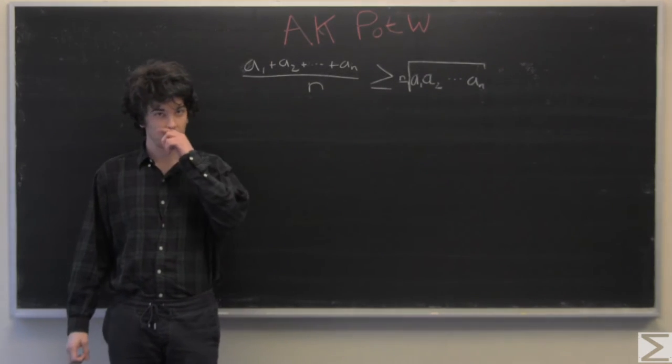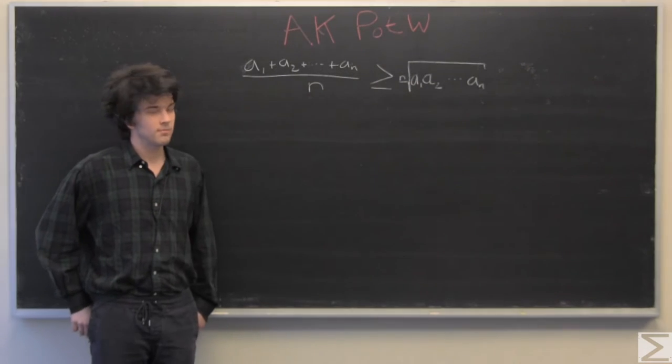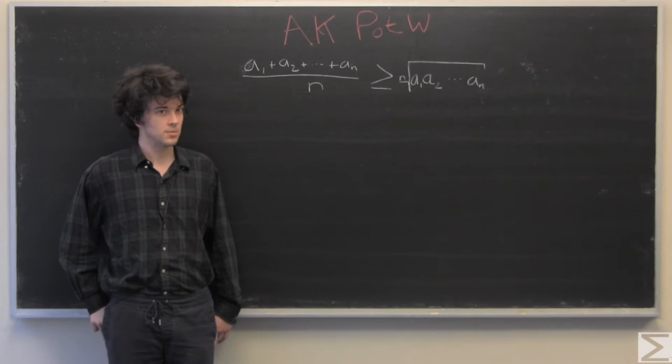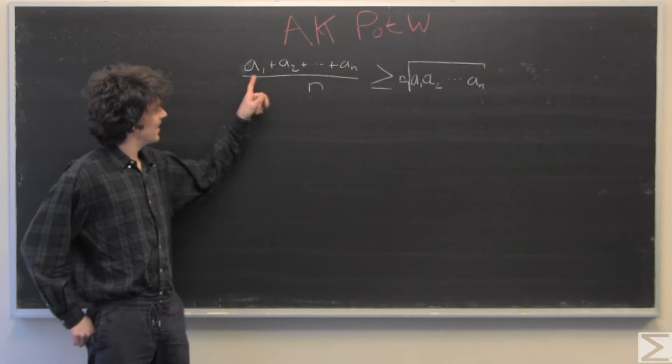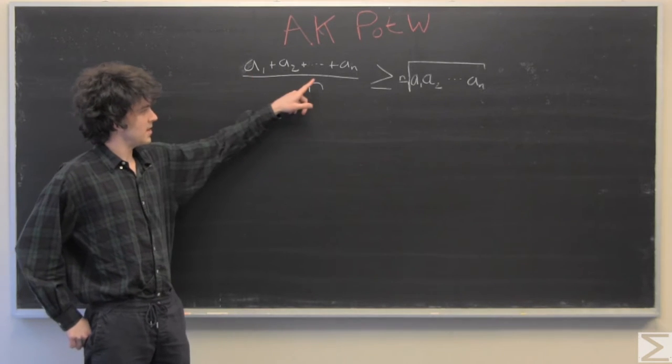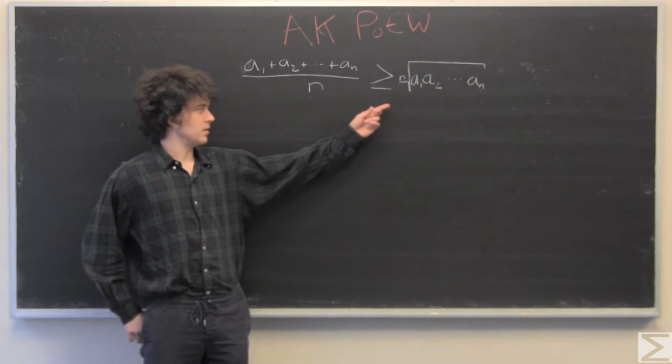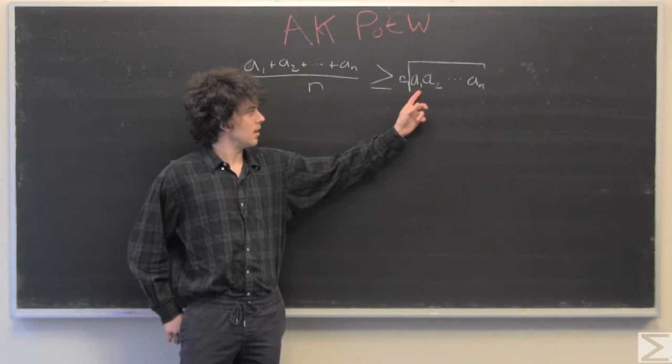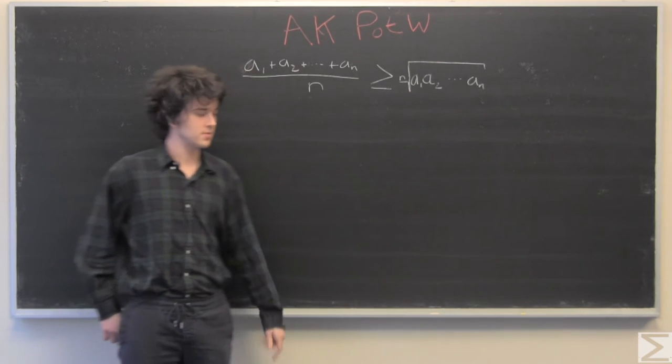Welcome to this week's Advanced Knowledge Problem of the Week. Today we're going to prove that the arithmetic mean is greater than or equal to the geometric mean, meaning that the sum of any number of terms divided by the number is greater than or equal to the nth root of the value you get when you multiply each of the terms.